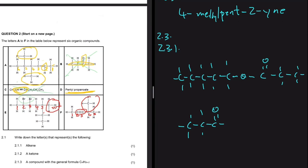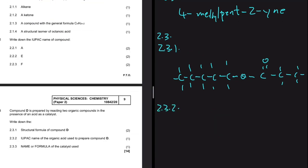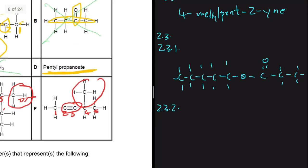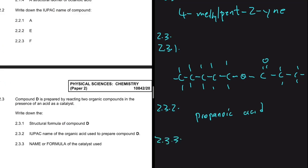For 2.3.2, the IUPAC name of the organic acid used to prepare compound D: the last part of the ester name comes from the acid, which is 'propanoate' — so the acid is propanoic acid. If the question asked for the alcohol, the answer would be pentanol.